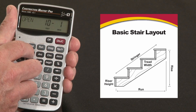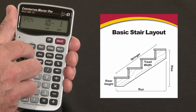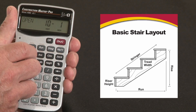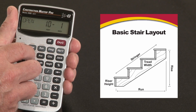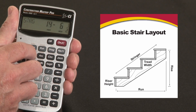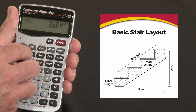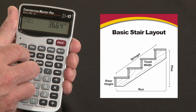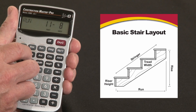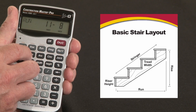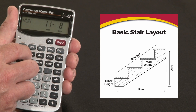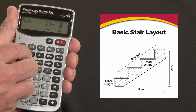The stairwell opening is 10 feet 1 inch, based on the default setting for headroom clearance, which is 6 foot 8 — which you can change if you like. The next press gives us a stringer length of 14 feet 6.5 inches and the angle of incline. The final press gives us the total run of the stairway, which is 11 foot 8 inches, which would probably work in this situation.